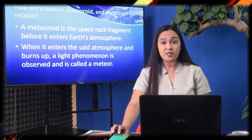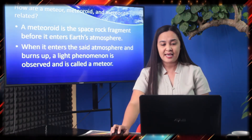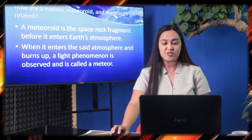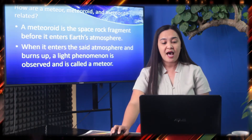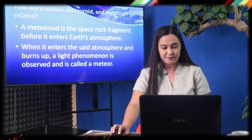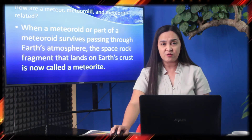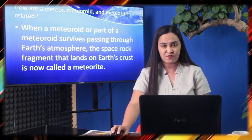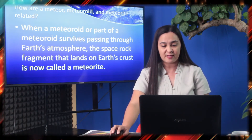How are a meteor, meteoroid, and meteorite related? A meteoroid is the space rock fragment before it enters the Earth's atmosphere. When it enters the atmosphere and burns up, a light phenomenon is observed and called a meteor. When a meteor, or part of a meteoroid, survives passing through Earth's atmosphere, the space rock fragment that lands on Earth's crust is now called a meteorite.